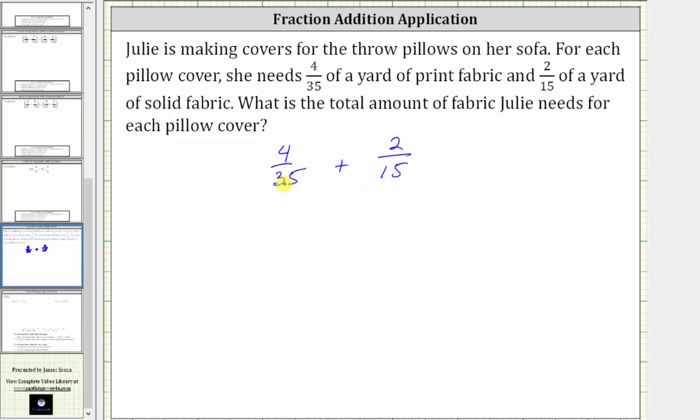So let's write 35 as 5 times 7 and 15 as 3 times 5. This will give us 4 over 5 times 7 plus 2 over 3 times 5.